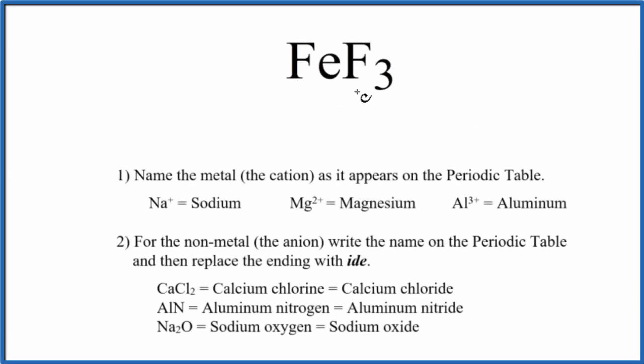To write the name for FeF3, we first need to realize we have a metal and then some nonmetals. So we have a metal and nonmetal, that's going to be an ionic compound. This is considered a binary ionic compound because we have two different elements, the Fe and the F.